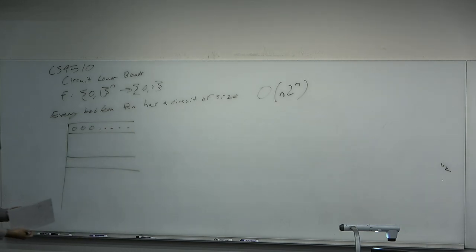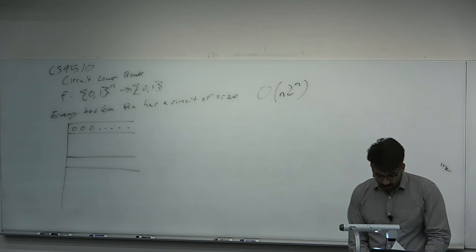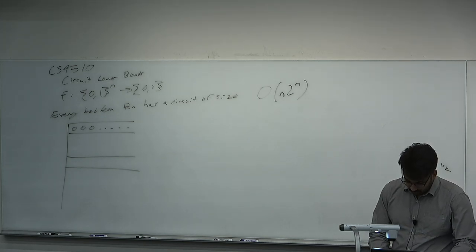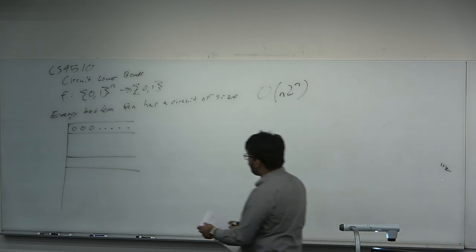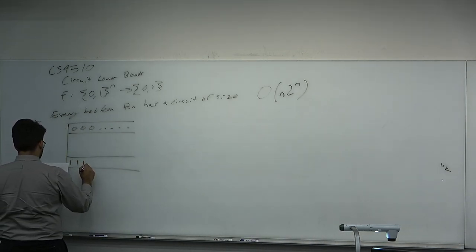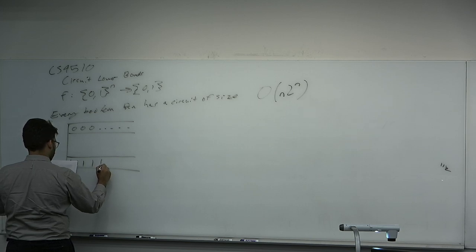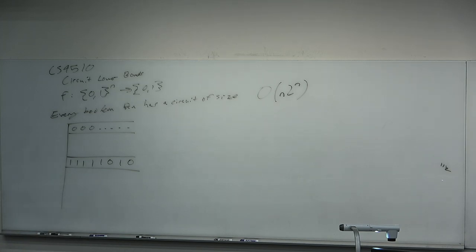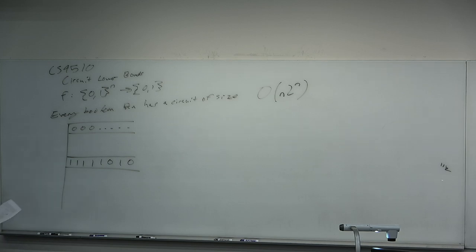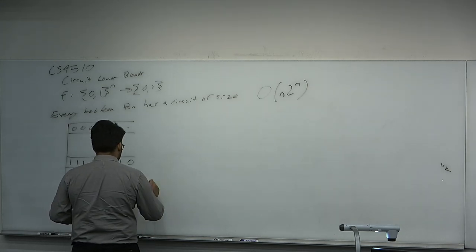Let's suppose we have a Boolean function represented as a truth table. You arrange the rows in a certain way, and we are going to wire up to each row of the truth table a small sub-circuit, such that that sub-circuit will only light up if the inputs to the Boolean circuit are exactly that row of the truth table. Using our standard AND, OR, NOT gates — here's our jellyfish.